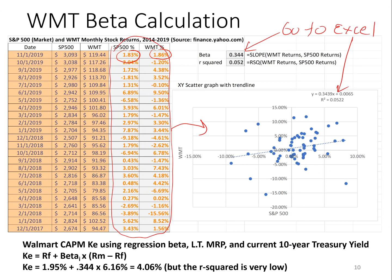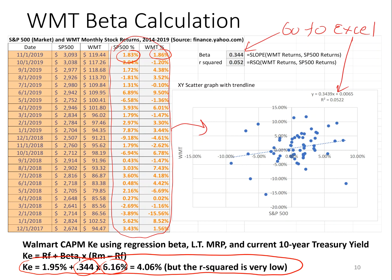I can then use that beta along with the historical market risk premium to calculate the expected return of Walmart. The cost of equity for Walmart uses the treasury rate — on the day I did this analysis, 10-year treasury rates were 1.95%. With a beta of 0.344 and a long-term market risk premium of 6.16%, for shareholders in Walmart — a very safe stock with only a 0.34 beta — if the stock market is down 10%, Walmart is only down 3.4%. So you should only demand about a 4% return for Walmart based on this model.